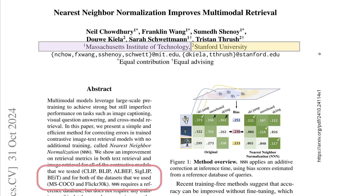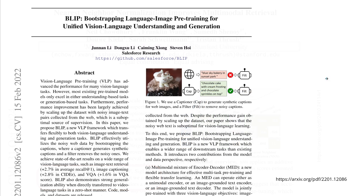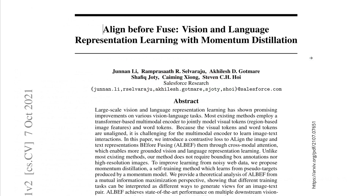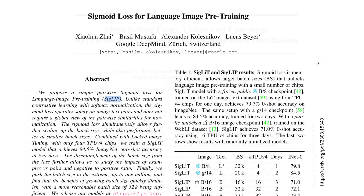Let's have a look at what we are talking about. The authors tested a different set of multimodal models — CLIP, BLIP, and others. BLIP, for example, is bootstrapping language-image pre-training for unified vision-language understanding and generation from Salesforce. Or ALIGN — aligning image and text representations before fusing through cross-modal attention, also by Salesforce. Or Google DeepMind's SigLIP — sigmoid loss for language-image pre-training. Or Microsoft's BEiT — pre-training of image transformers.